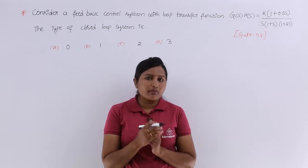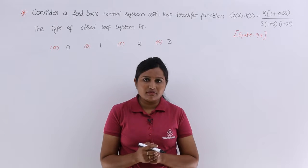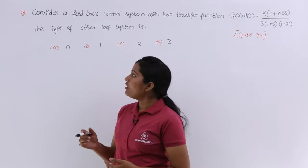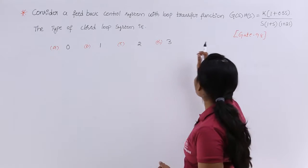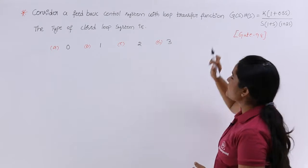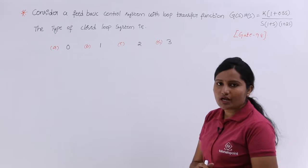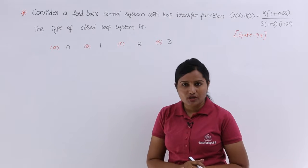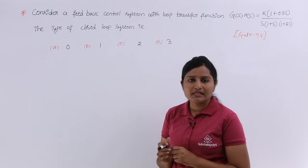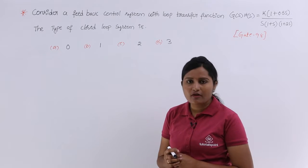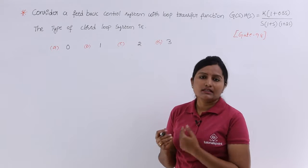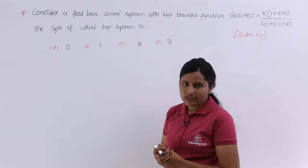Type number of the system can be defined by the denominator of the transfer function. So if this is the loop transfer function G(s)·H(s), the denominator of that loop transfer function G(s)·H(s) defines the type number of the system.